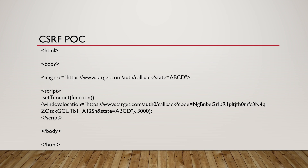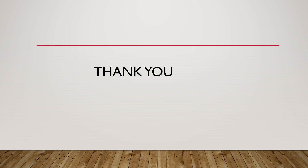If there is validation of the state parameter, the attack will fail. But if the vulnerability is present and the state has been fixated, the attacker is going to log into the target site using the Sign In with Google functionality and get logged into the victim's account. So this is how this attack works. Thank you so much for watching this video.